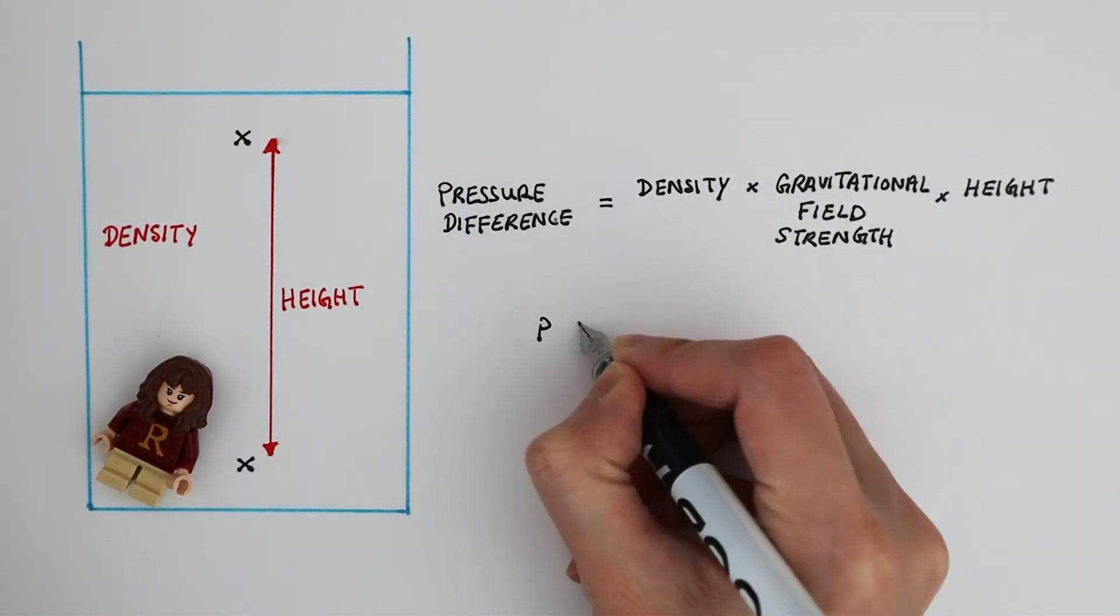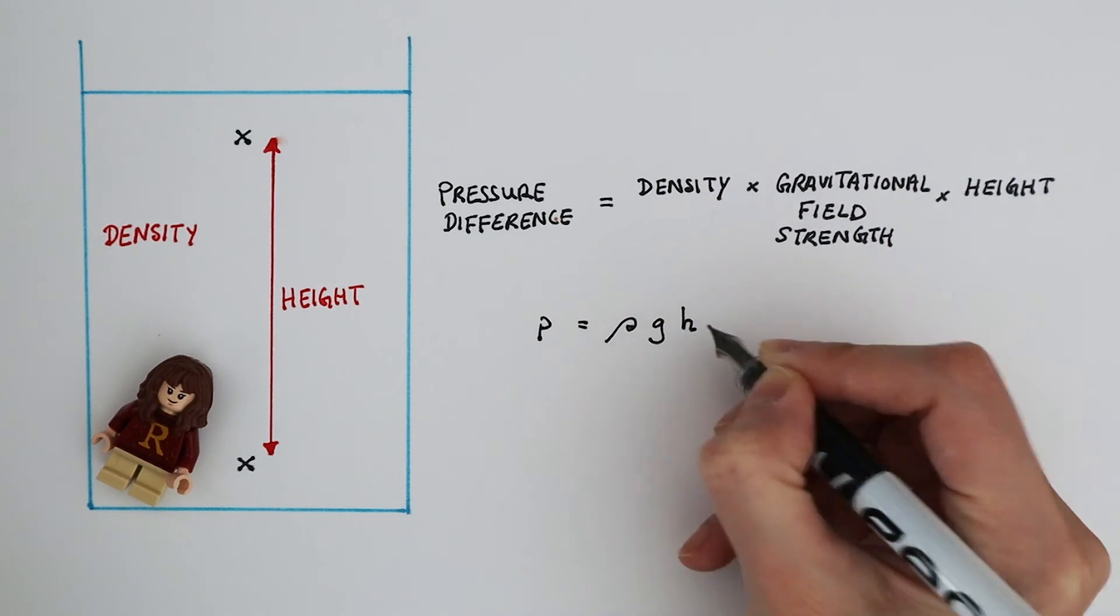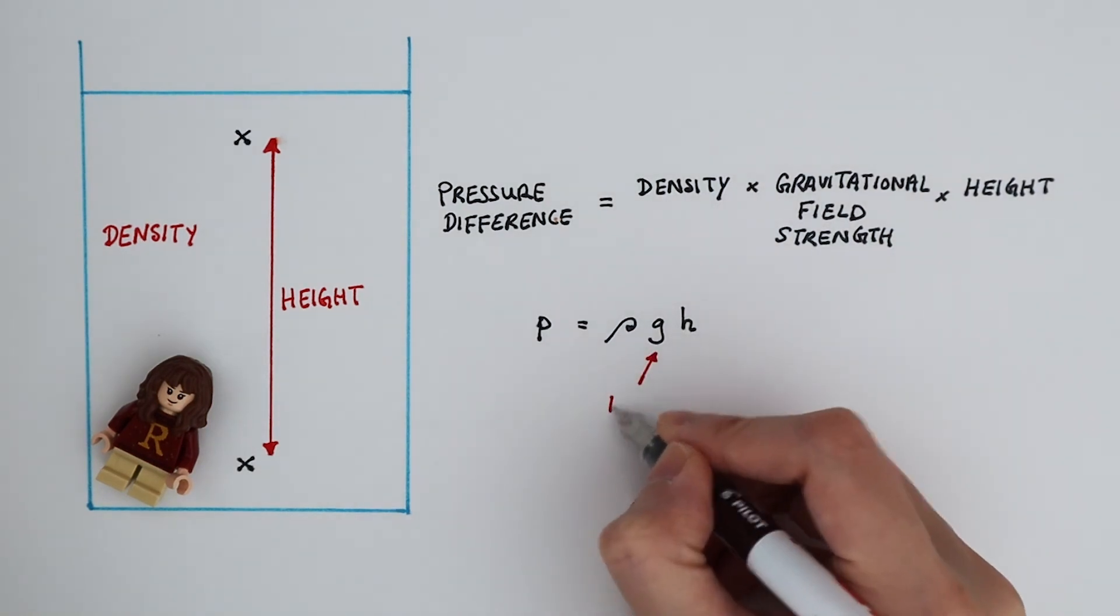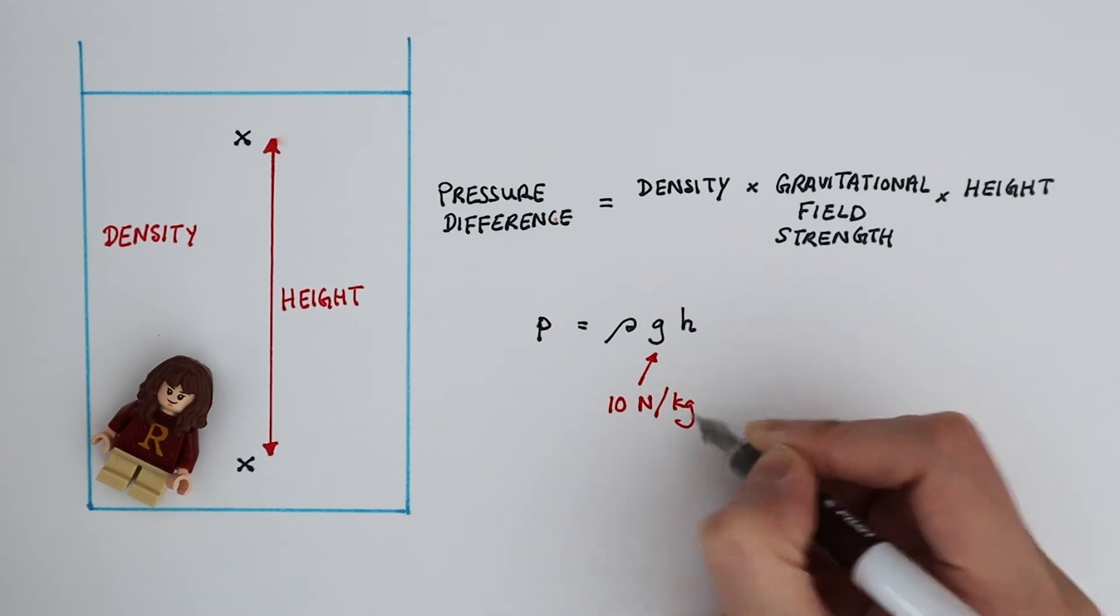Or you can give them symbols rho, g, h. G on Earth can be approximated to be 10 newtons per kilogram.